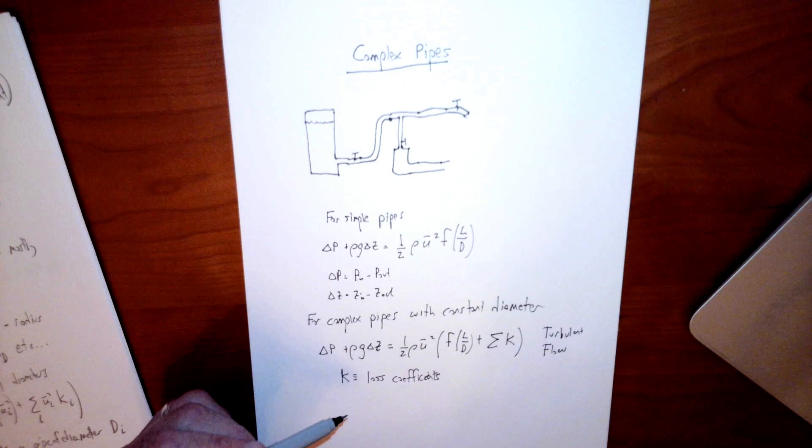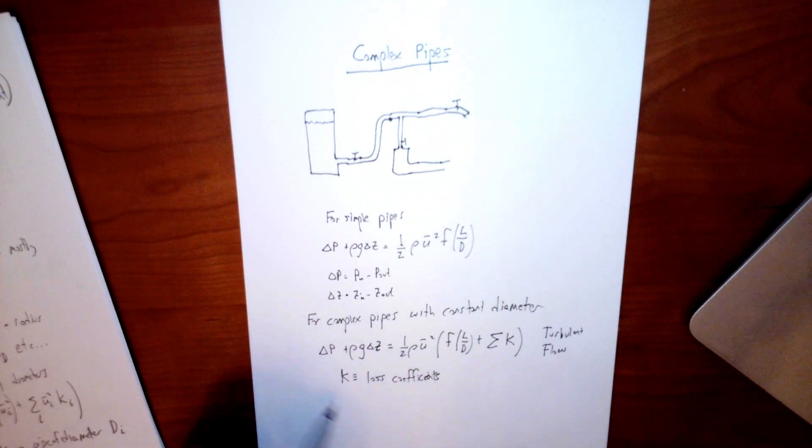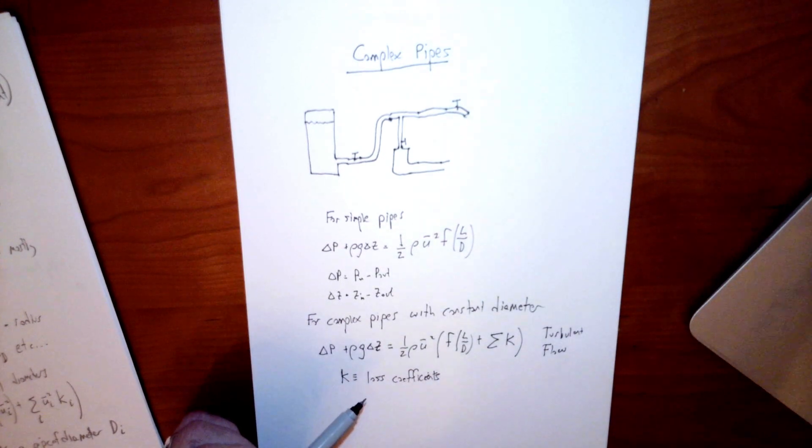They depend on, if it's a bend in the pipe, it depends on exactly how the pipe is bent. How much is it bent? How is it bent, slowly or sharply, the radius of curvature of the thing? What type of valve? All these things matter. So these K's, there are lots and lots of tables for these, and you have to be very careful to pick out the ones that are relevant to the problem you're dealing with.